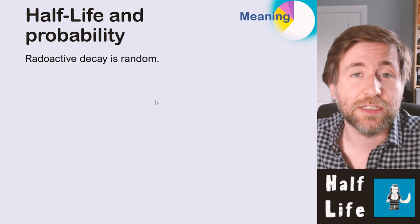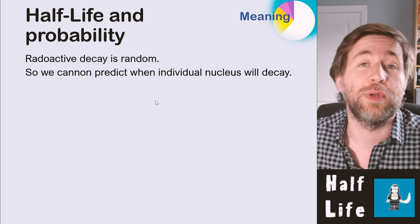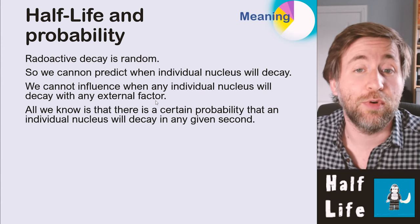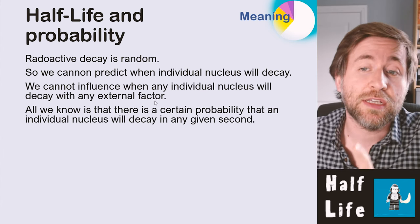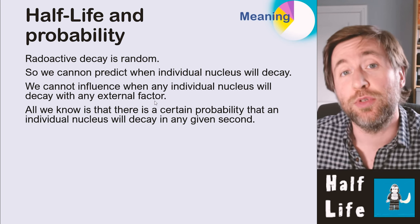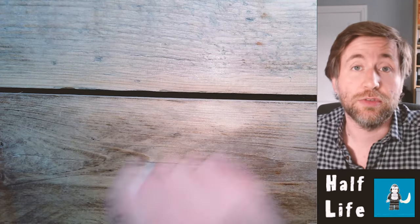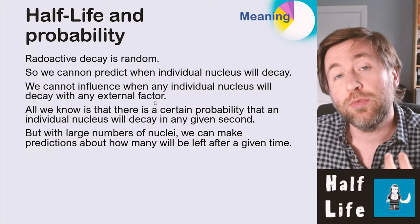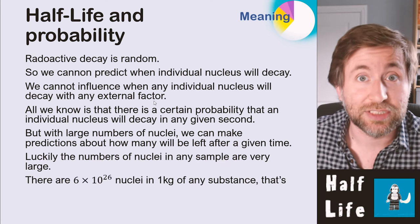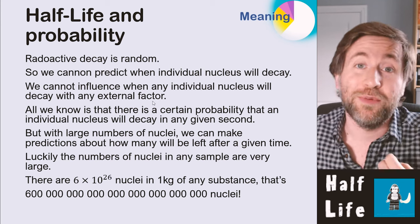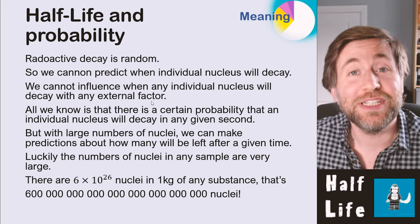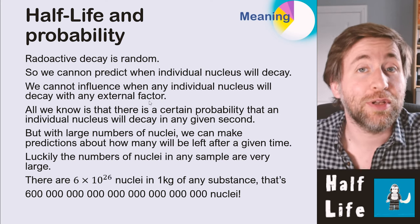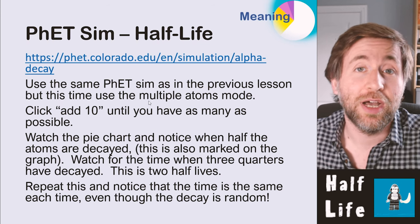We know that radioactive decay is random, so we can't predict when an individual nucleus will decay, and we can't use any external factors to influence when that decay will happen. But there is a certain probability that any individual nuclei will decay in any given second. With very large numbers of nuclei — and in any given sample there are large numbers — it will always follow a set pattern governed by probabilities. Therefore we can model it with dice, which I'm going to use in this video to model half-life.